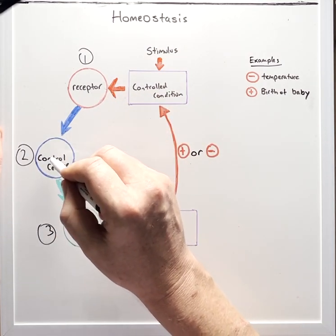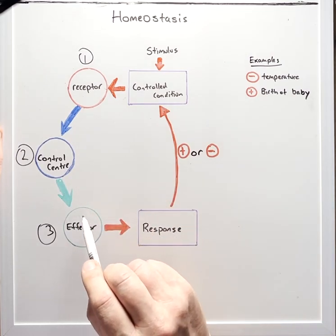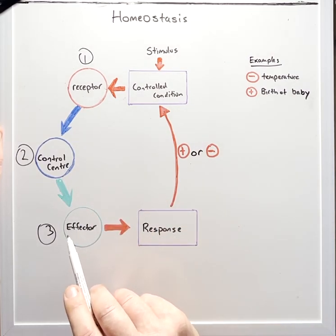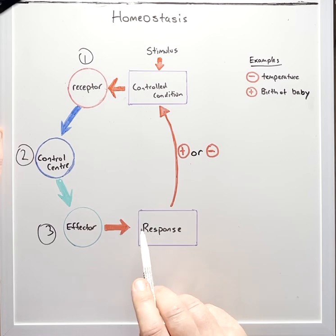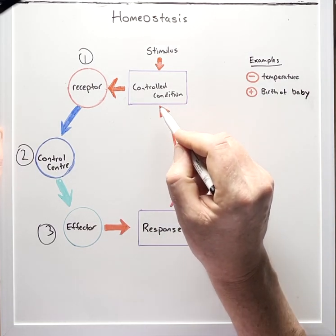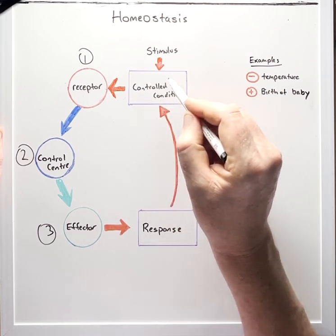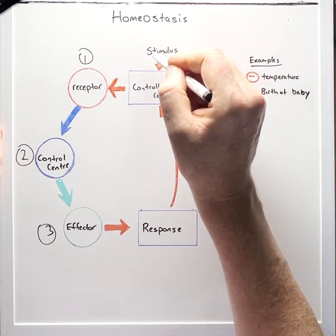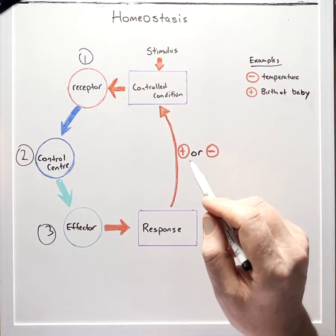The brain makes sense of that signal and then sends another nerve signal to the effector, let's say the sweat glands on the skin which produces the response which is sweating. This then causes a negative feedback which ultimately reverses that first condition change which was the heat. So that sweating brings it down and cools the body.